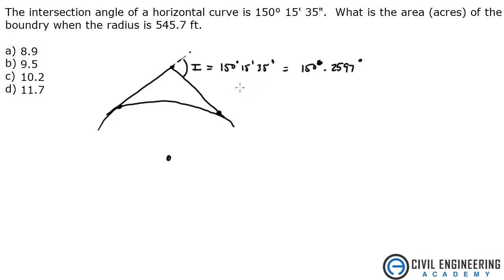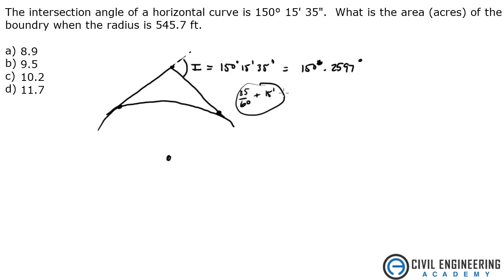If you don't remember how to do that: you divide 35 by 60, add that to the 15, and then divide the whole thing by 60. That's going to give you 0.2597.